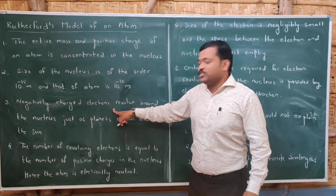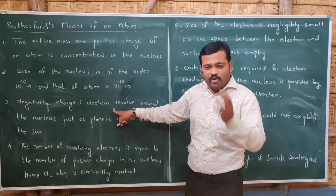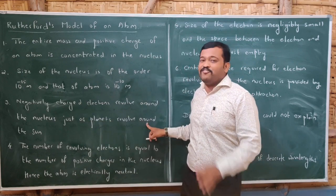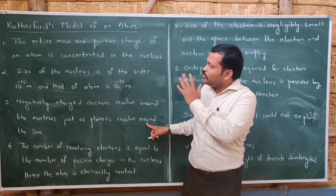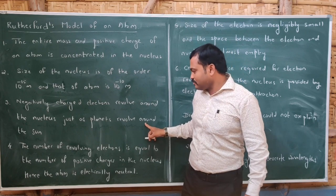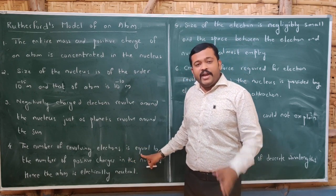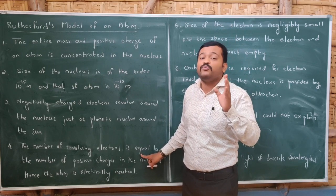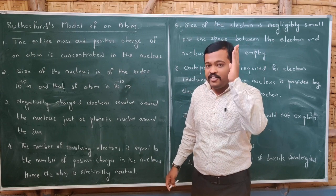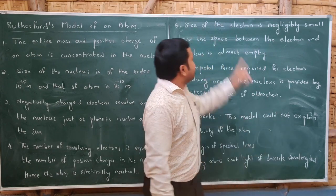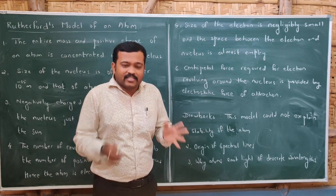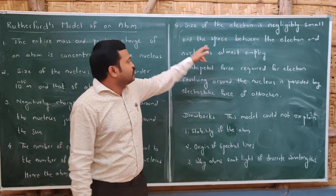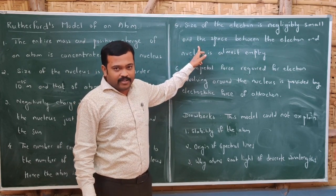The model also described electrons revolving around the nucleus. Negatively charged electrons revolve around the nucleus just as planets revolve around the sun — that is why this model is also called the planetary model of the atom. The number of negatively charged electrons equals the number of positive charges in the nucleus, making the atom electrically neutral. The size of the electron is negligibly small, and the space between the electron and the nucleus is almost empty.